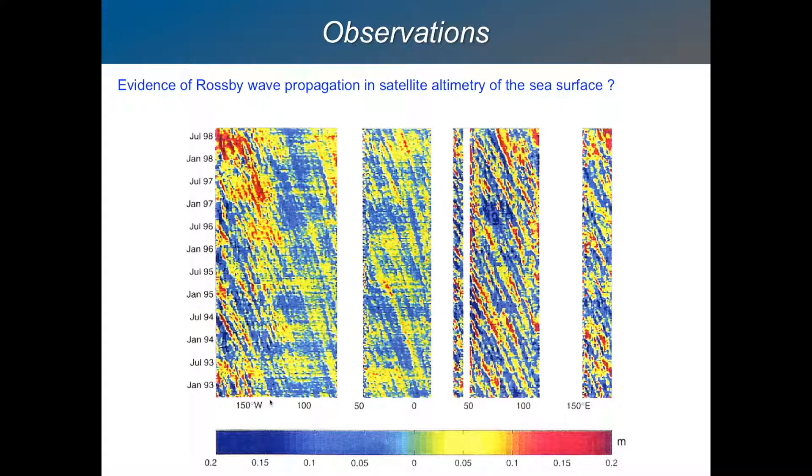And so these are the ocean basins. So this is time and this is longitude at a certain range of latitudes, somewhere near the equator. So this is the Pacific Ocean. This is America. This is the Atlantic. This is Africa. And this is the Indian Ocean. I think that stripe there is Madagascar.